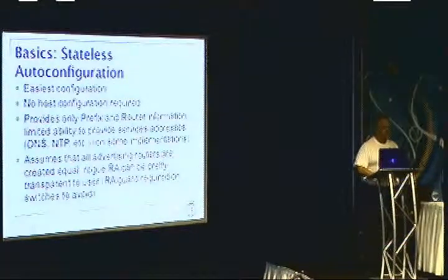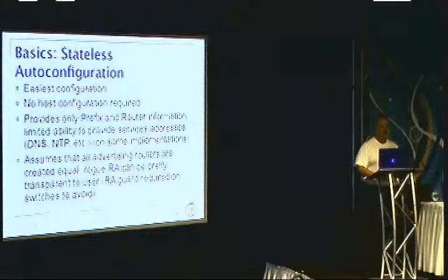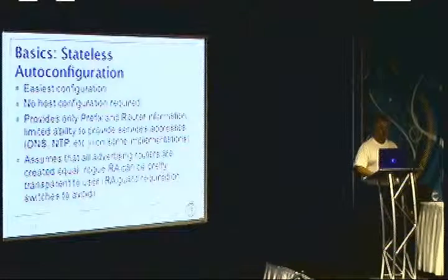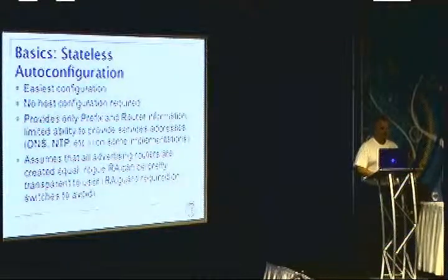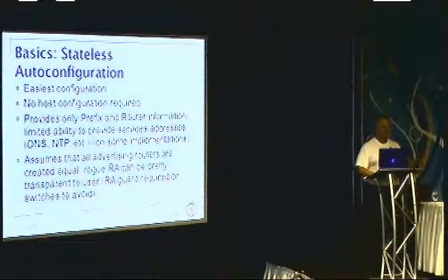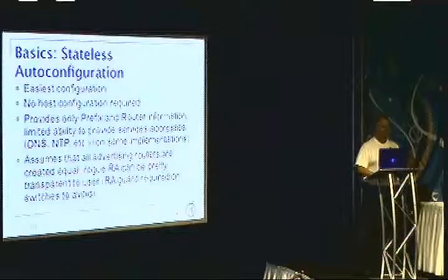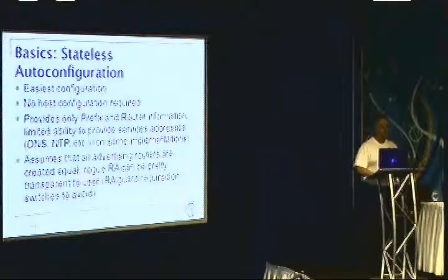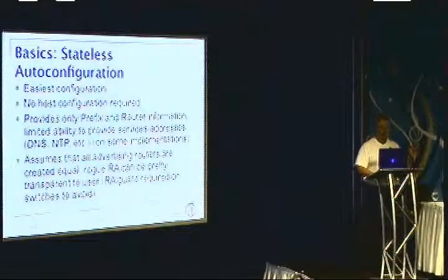Stateless autoconf is the easiest way to configure a host for IPv6. You just plug it into an IPv6-enabled network with an IPv6-enabled router, turn it on, and it gets an address automatically. It does have shortcomings: it provides only prefix and router information, with limited ability to provide DNS information and no ability to provide NTP servers, boot files, or boot servers. If you need those additional services, you need DHCP — either stateless DHCP in conjunction with stateless address autoconfiguration, or stateful DHCP to also issue the address. It also assumes all advertising routers are essentially equal with no ability to discern an invalid router from a valid one.